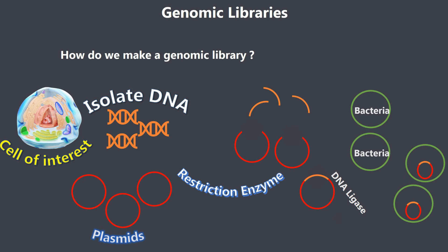What we end up with are thousands of bacterial cells, all with different sections of the DNA. Combined, all these different sections form the original genome, but they are much smaller sections and much easier to work with. This combination of all these different cells forms our genomic library.